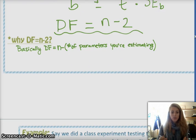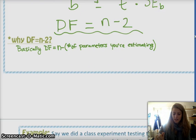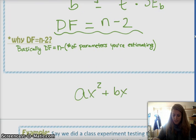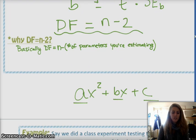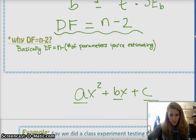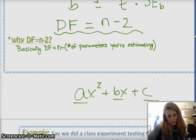There are two parameters you're estimating, so it's n minus 2. If you have a quadratic and you're estimating, the basic quadratic form is AX squared plus BX plus C, you would be estimating A, B, and C, in which case, then you would need n minus 3 degrees of freedom.